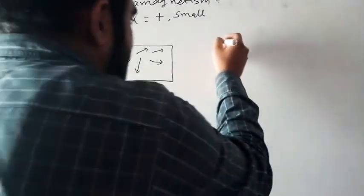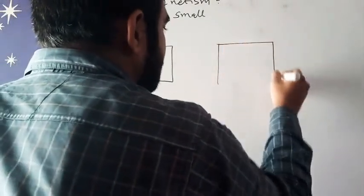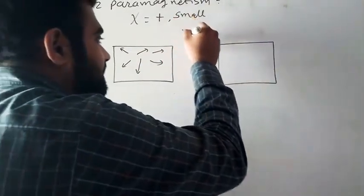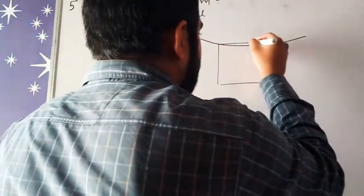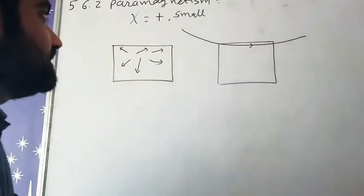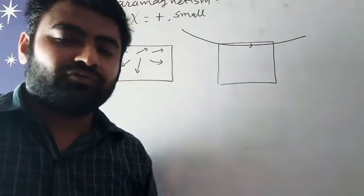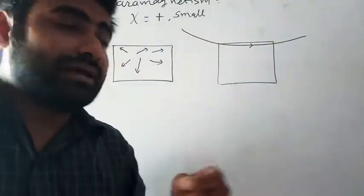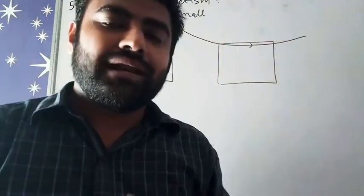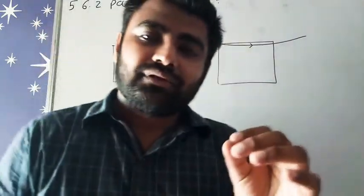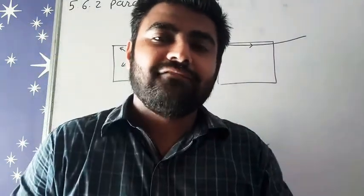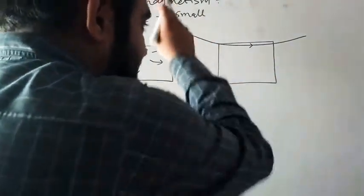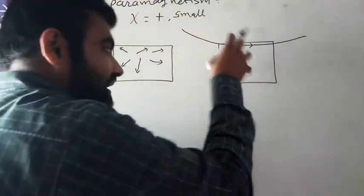If we give this paramagnetic material an external magnetic field, all the field lines pass through. Why? Because chi is positive. When chi is positive, the magnetic field can move inside. In diamagnetic material chi was negative, so external magnetic field was expelled.